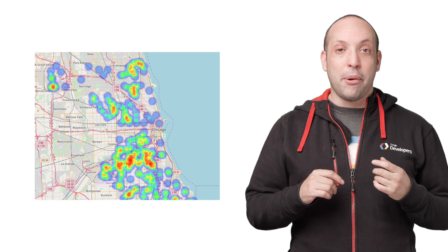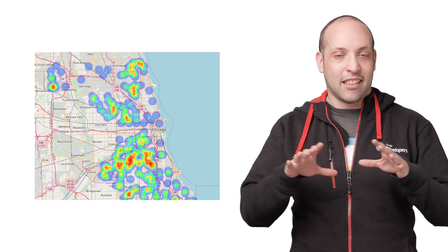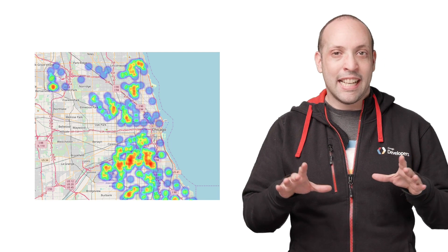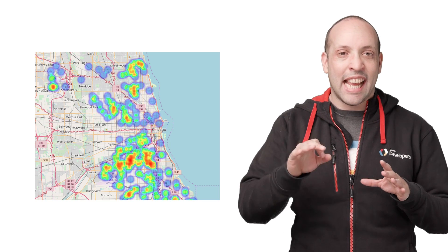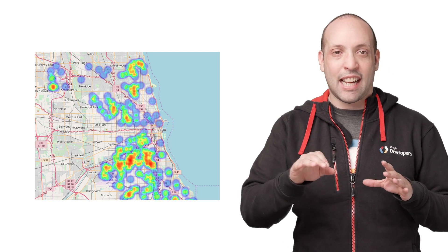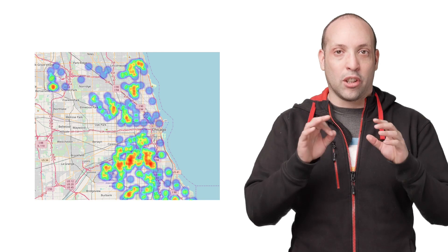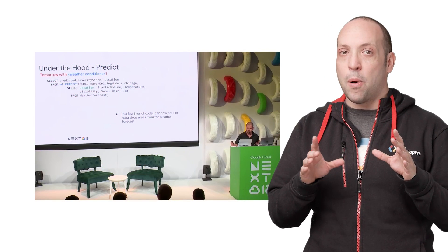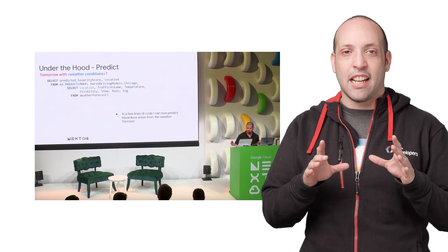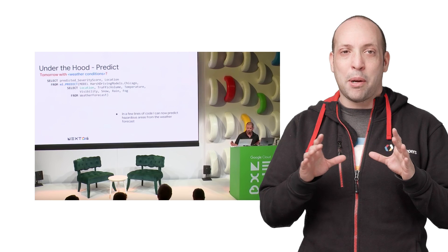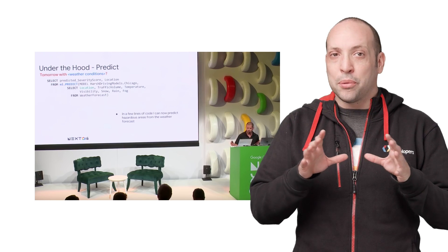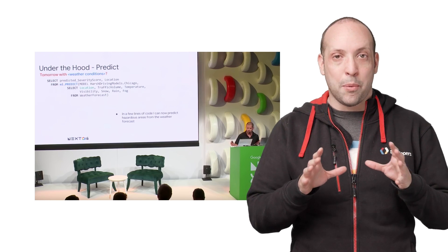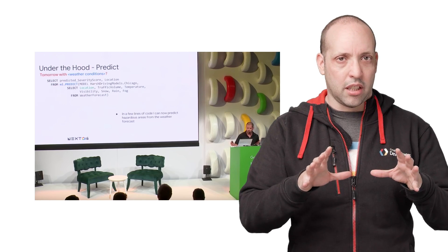BigQuery now has native functions that understand geography. And now you can also use BigQuery to create and execute machine learning models in the database, in SQL, where your data lives. In this talk, we can see how Bob and Daniel at Geotab use these new BigQuery features together to predict how road traffic in a city will change under any set of conditions.